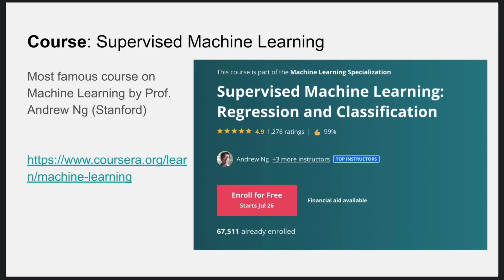Next is Andrew NG's course on machine learning. Andrew NG used to be a reputed professor at Stanford University — I think he was working on his own startup — but the course he created on machine learning still remains the best course on the topic. In the course he teaches the theory, specific machine learning algorithms, and also a programming language called Octave in which one can apply these machine learning concepts to solve problems.